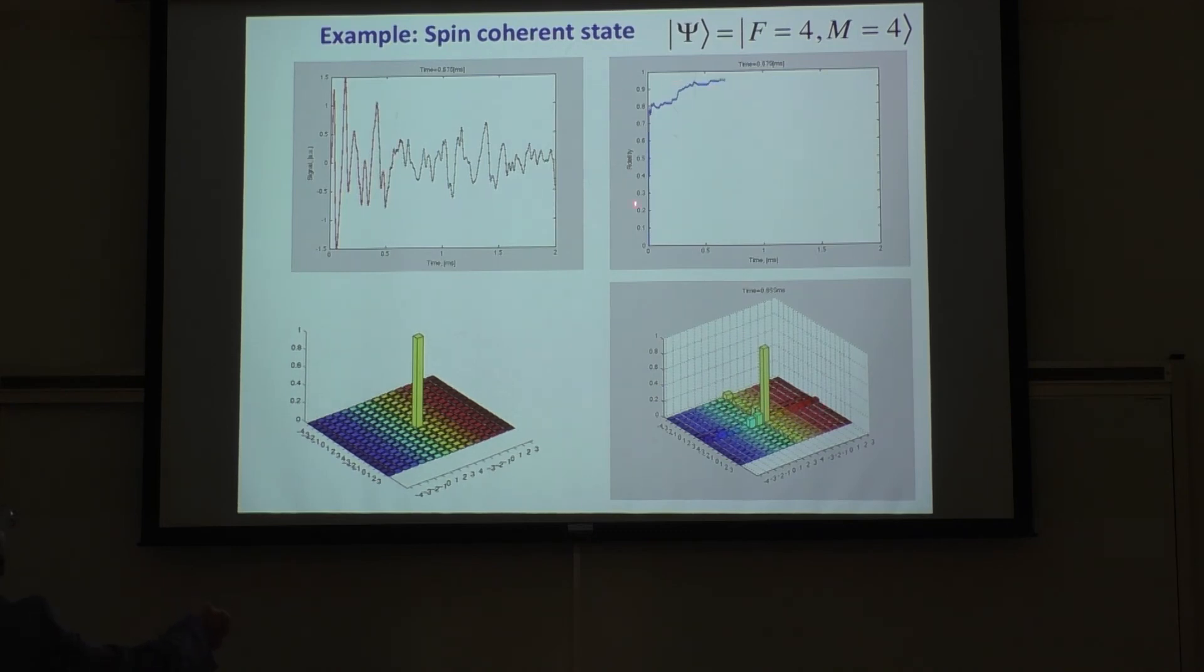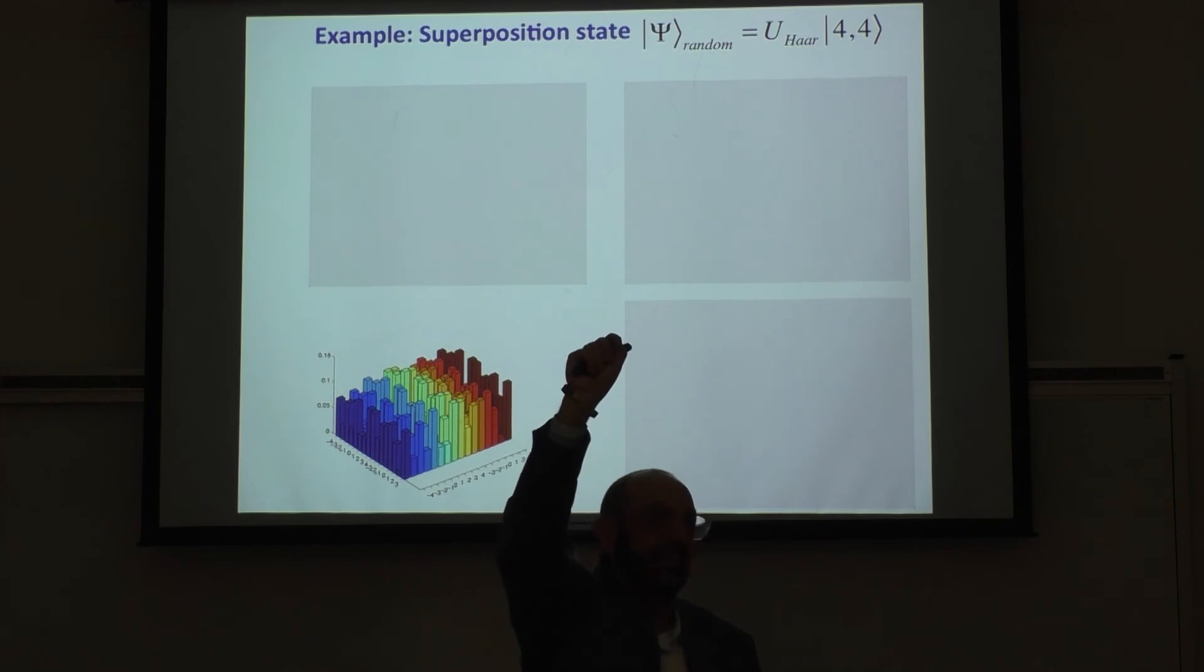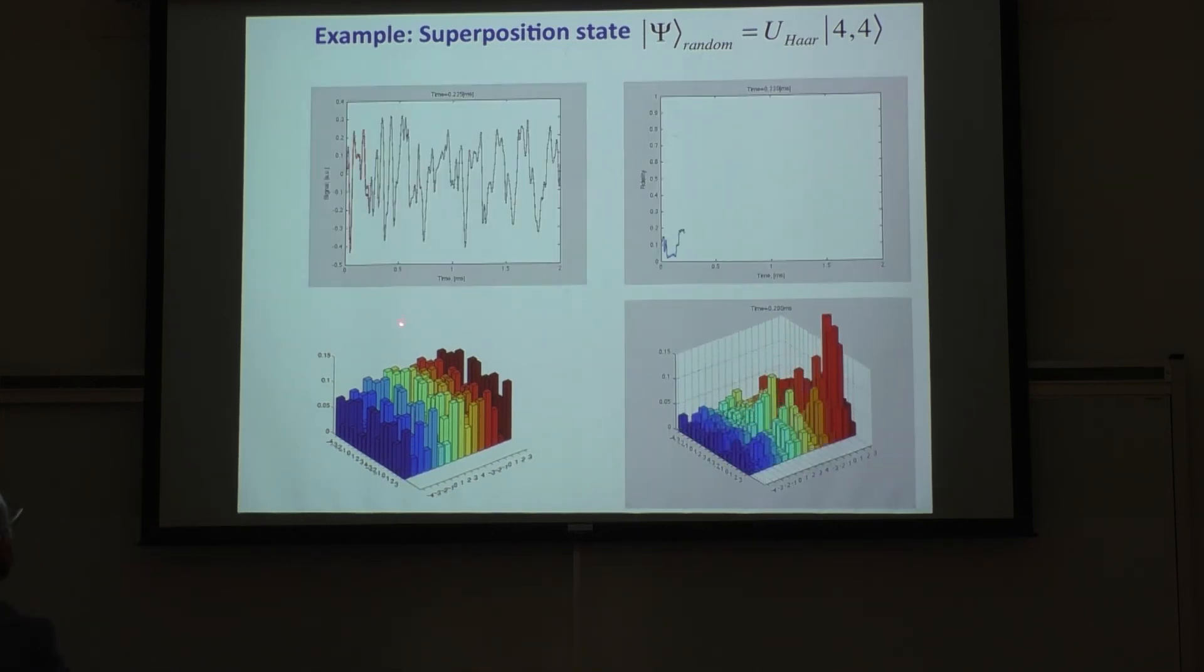So as we gain more information, this fidelity, which goes to one, is the overlap between our reconstructed state based on the algorithm and what we think the state should be. And it gets to 98 something percent. What about if we have - I mean, that was an easy state. Here's a random state. This is just the magnitude of these elements. This is what we call a Haar random state. We just pick a state in Hilbert space, which we can do because it sits on a surface. This is what we need to sample from that.